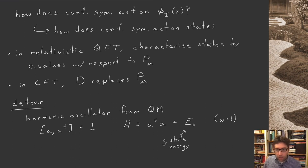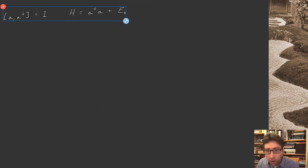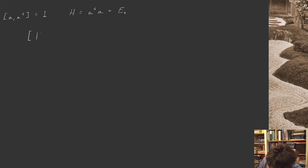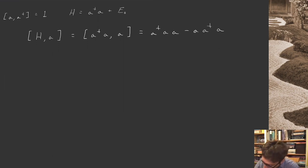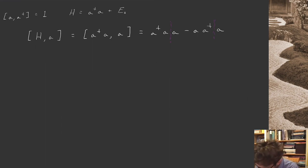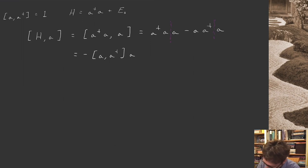Let's review some additional commutation relations. If I take H and commute it with a, I get a-dagger a commutator a, which expands as a-dagger a a minus a a-dagger a. Separating things out, I can write this as minus the commutator of a and a-dagger times a, which is just minus a. Similarly, if I take the commutator of H and a-dagger I get almost the same thing but with opposite sign — I get plus a-dagger. So there's a ground state, which is the state annihilated by the lowering operator a: acting on the ground state with a just gives zero.